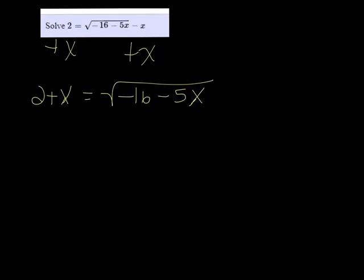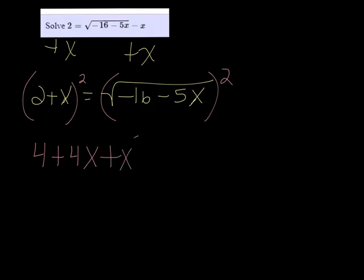To get rid of the radical, we square both sides. And that will give us 4 plus 4x plus x squared is equal to negative 16 minus 5x.